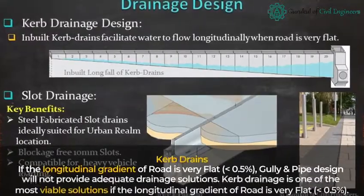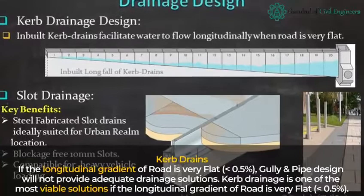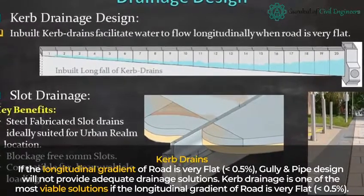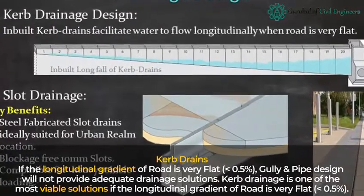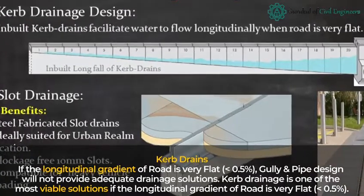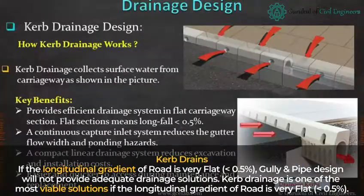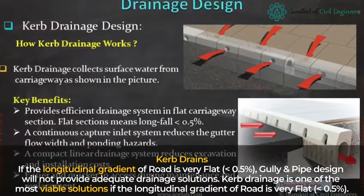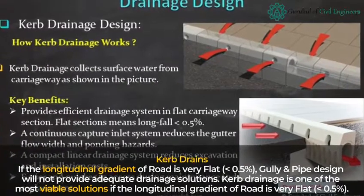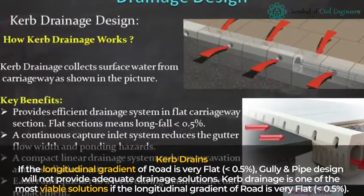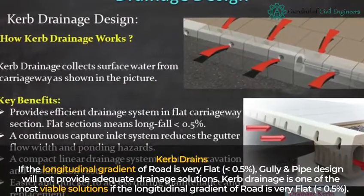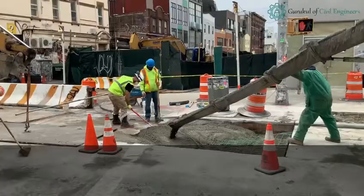Curb drains: if the longitudinal gradient of the road is very flat, gully and pipe design will not provide adequate drainage solutions. Curb drainage is one of the most viable solutions when the longitudinal gradient of the road is very flat.